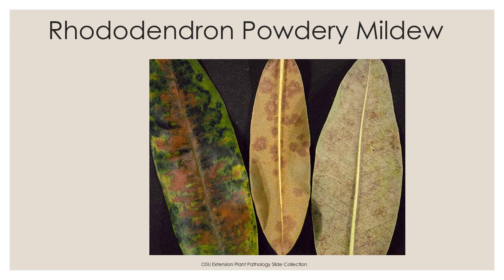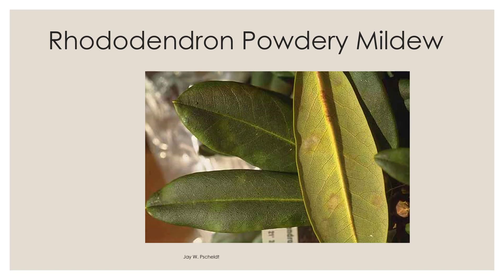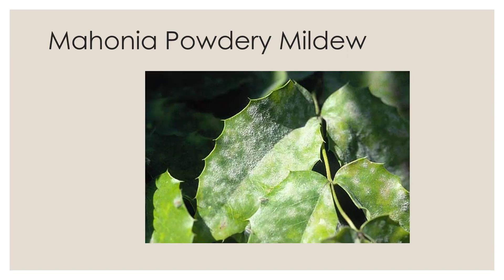Even from the leaves shown here you can see three different looks for powdery mildew on rhododendrons, but if you turn to the underside you would see fruiting bodies. You can also see spores on the bud scales — it almost looks like a virus — but again, fruiting bodies are visible on the underside of the leaf.